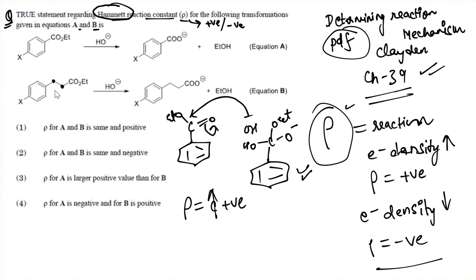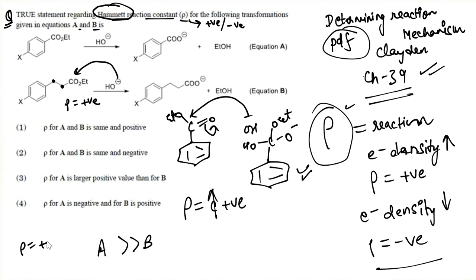When there are two methylene groups between the benzene ring and the ester, the effect is less pronounced because the electron-richness decreases with distance. So even though rho is positive for both, equation A has a higher value than equation B. Both are positive because ultimately both processes are ester hydrolysis. The answer is option number 3: rho for A is a larger positive value than for B.